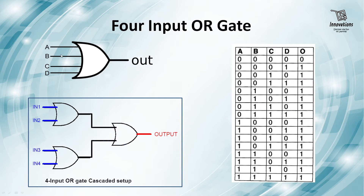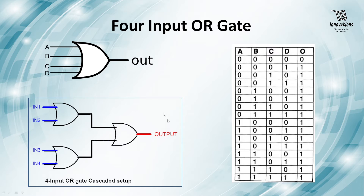Let us have a look at a four-input OR gate and its truth table. Only when all the inputs are 0 is the output 0; in all other cases when any or all inputs are 1, the output is 1. We can also cascade a four-input OR gate using three two-input OR gates. Two OR gates feed their outputs into a third two-input OR gate, creating a cascaded four-input OR gate setup.